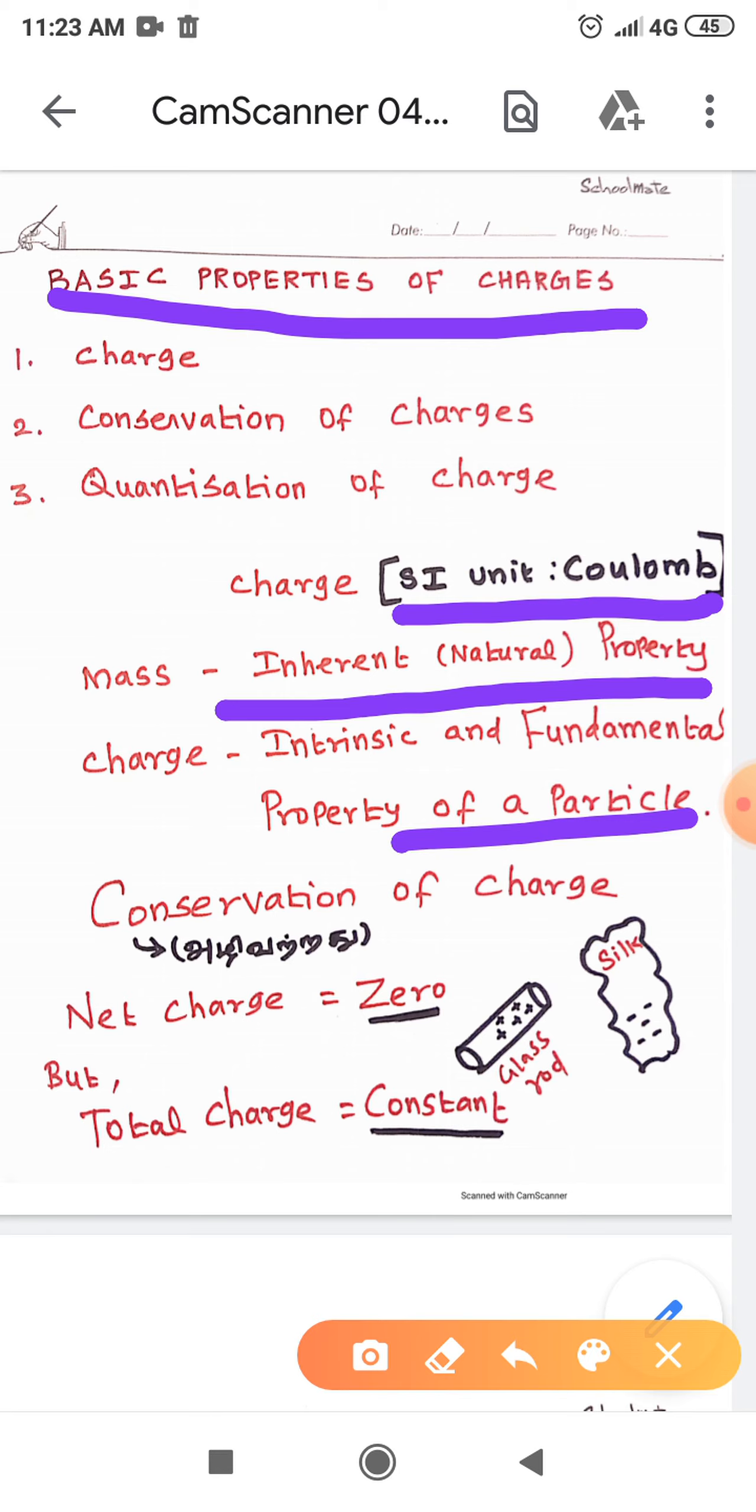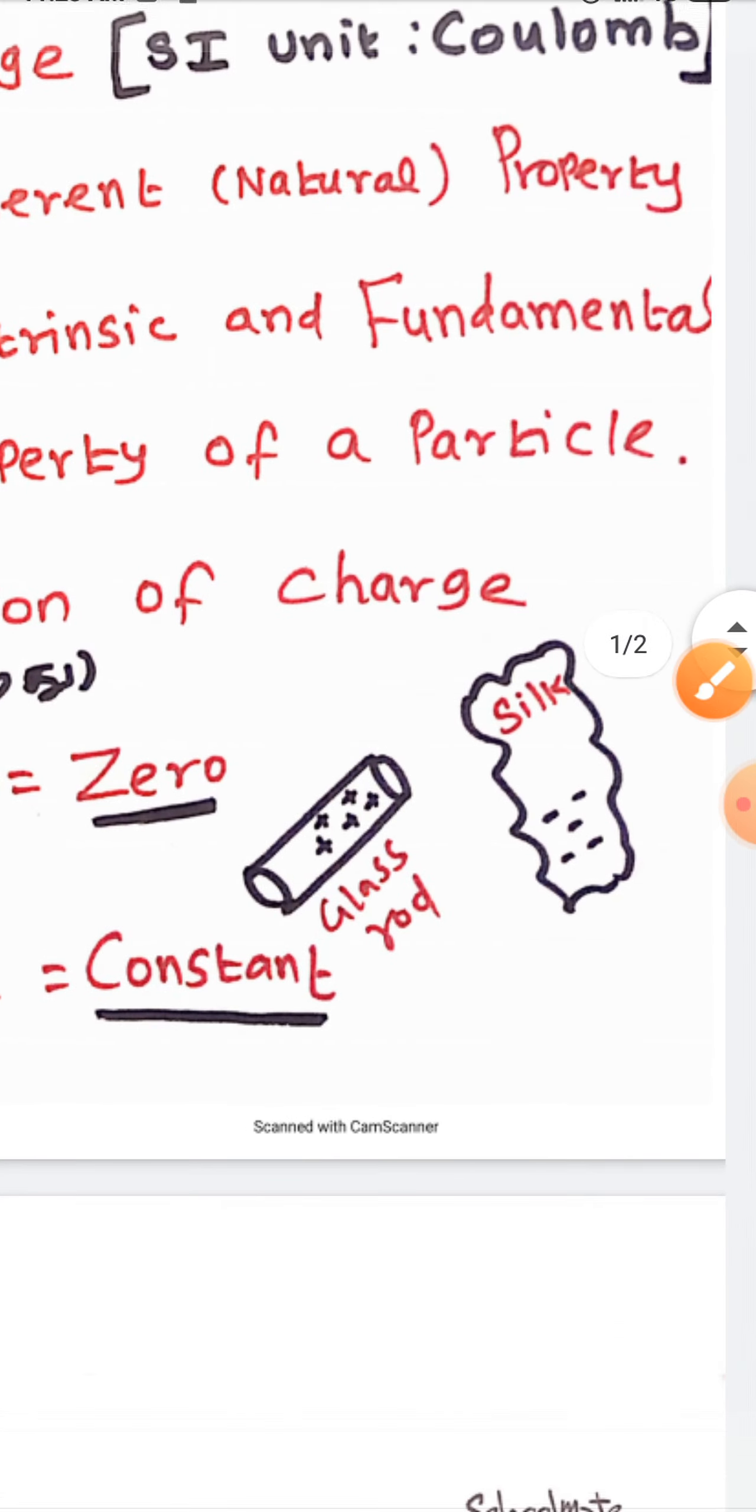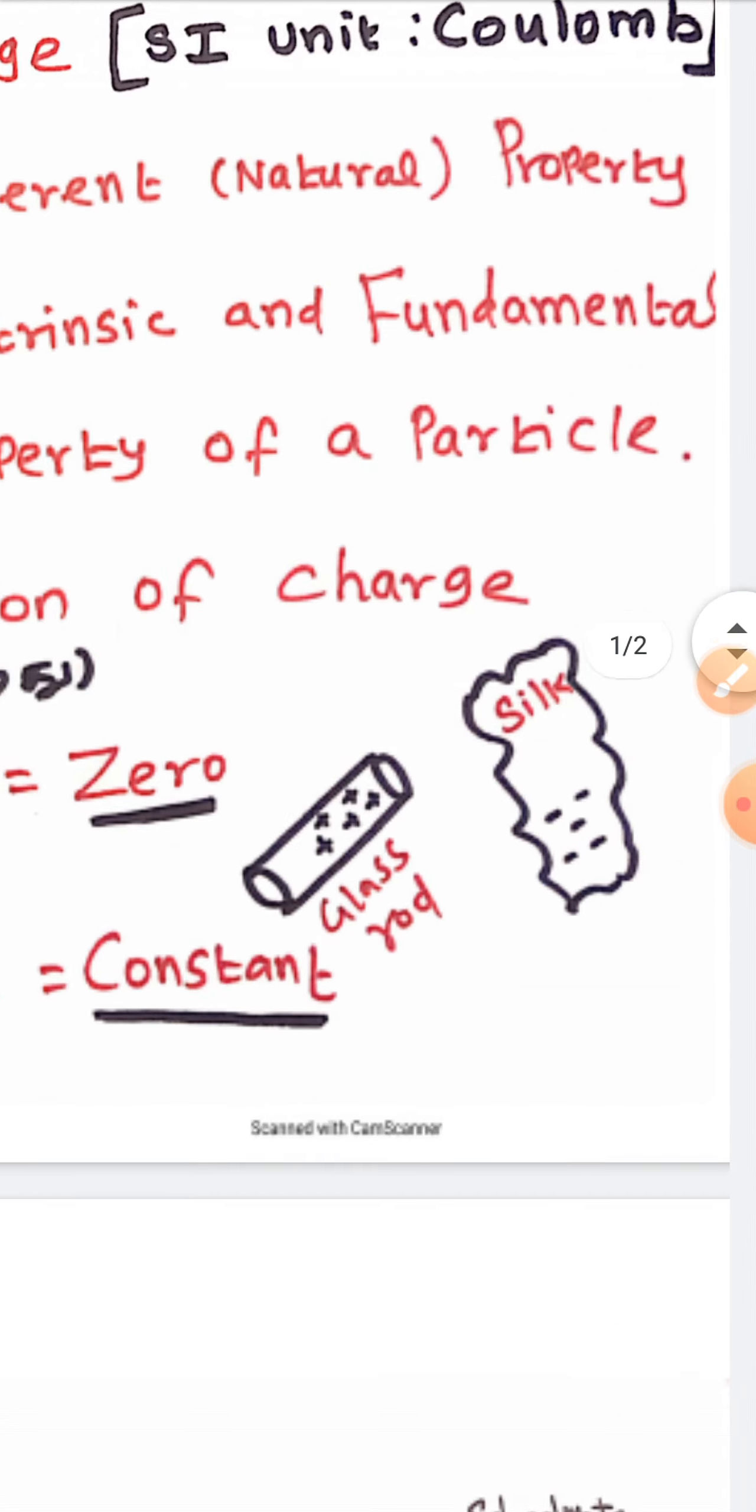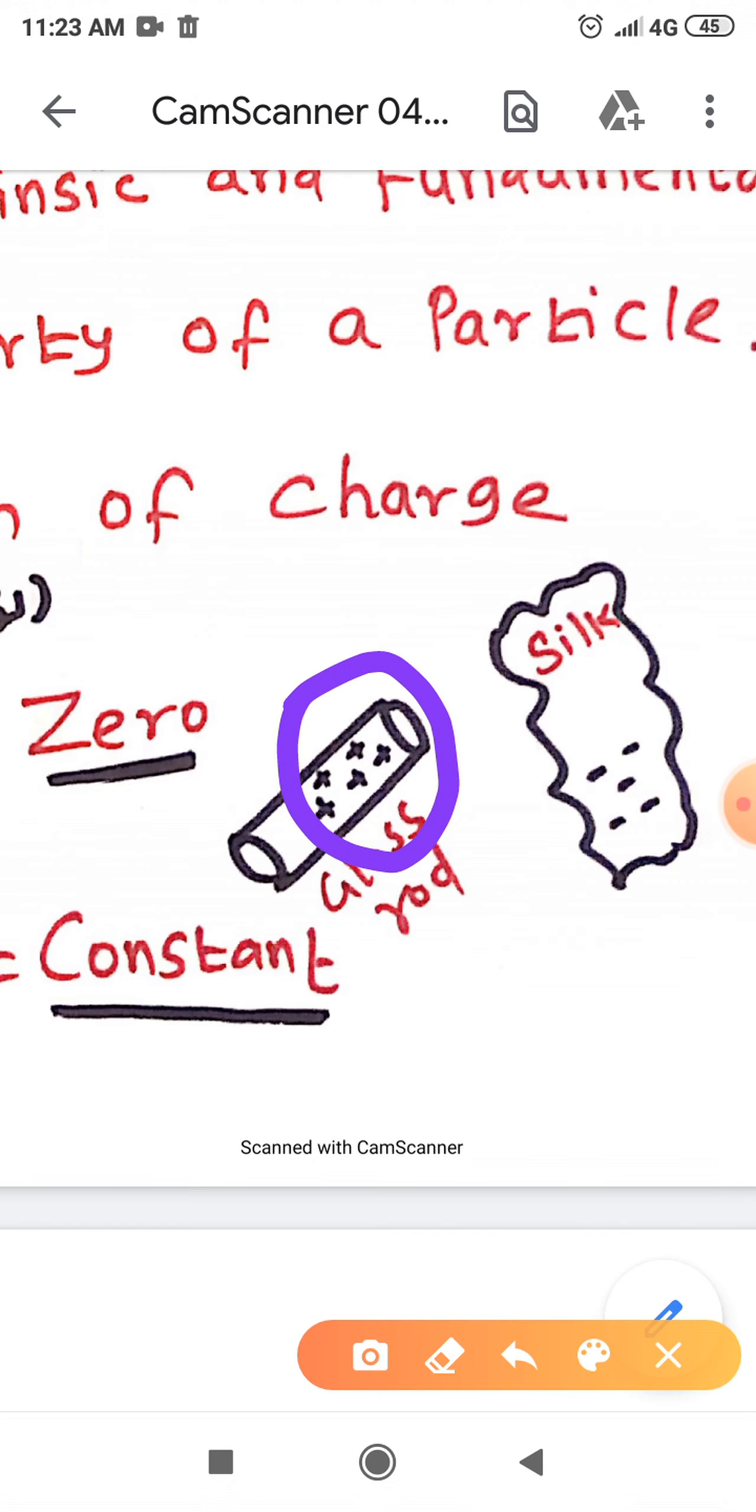Then the second property is conservation of charge. Conservation means the charges never destroy. To understand the conservation of charge, I will tell you an example. When a glass rod is rubbed with silk, the glass rod acquires positive charges and the silk material acquires negative charges.